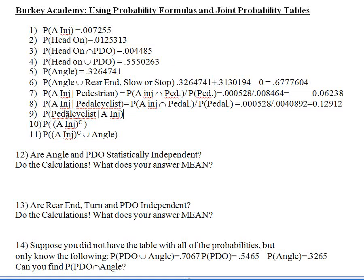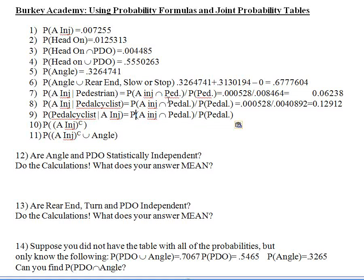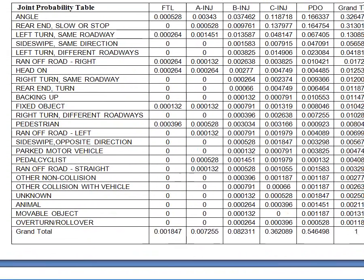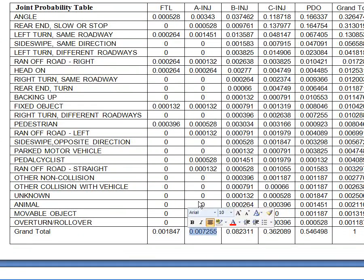Now let's reverse those two. What's the probability that, given there was an A injury involved, a pedal cyclist is involved? The difference is which event is given and which is probable. On top we still have the intersection: A injury and pedal cyclist — 0.000528 — same as before. But now we divide by a different number: the probability of an A injury, which is the column total 0.007255.